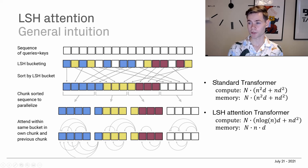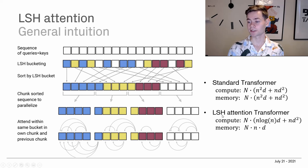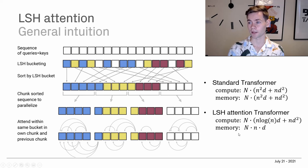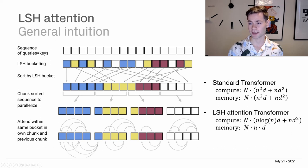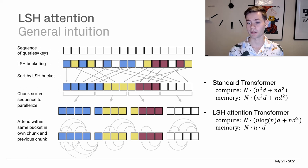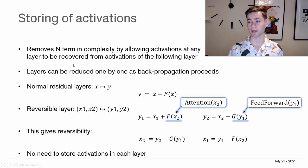Looking at computational complexity: the standard transformer used in BERT has computational complexity of N(n²d + nd²) and similar memory complexity, where N is the number of layers. With LSH attention transformers, we significantly improve both computational and memory complexity — reducing squared terms to essentially linear terms. However, the paper goes further to also address this N term representing the number of layers, because we don't want linear scaling in the number of layers.